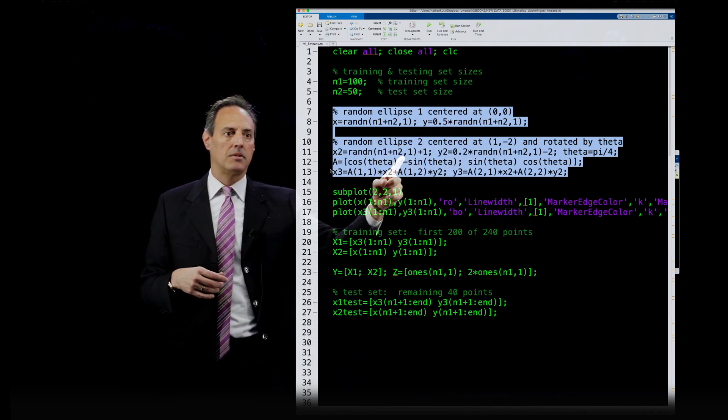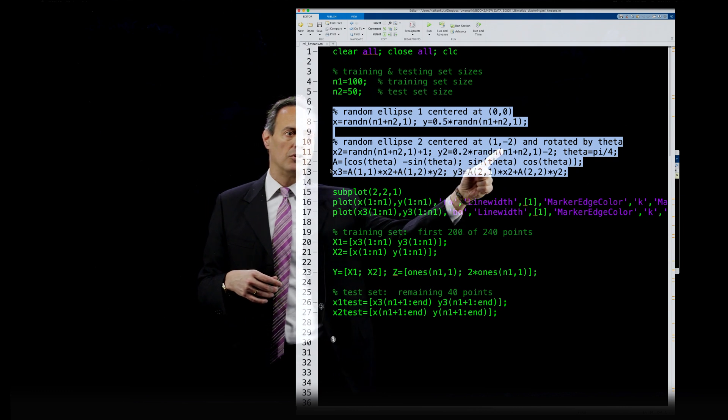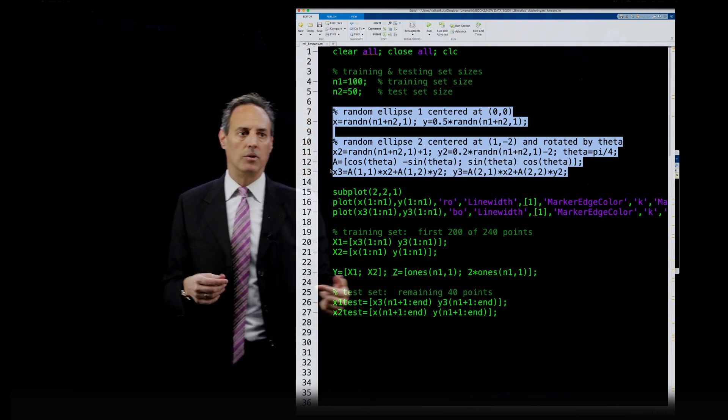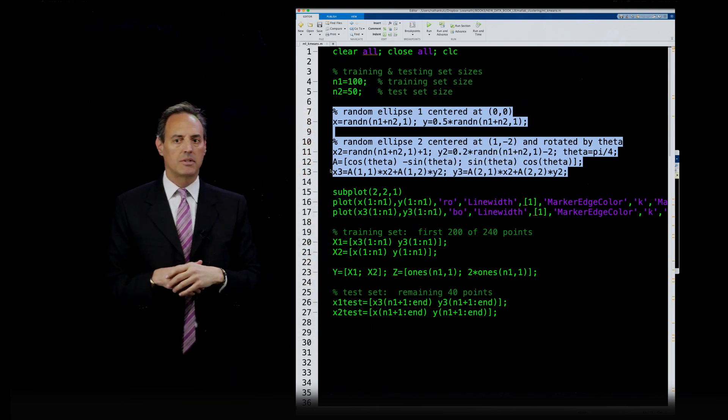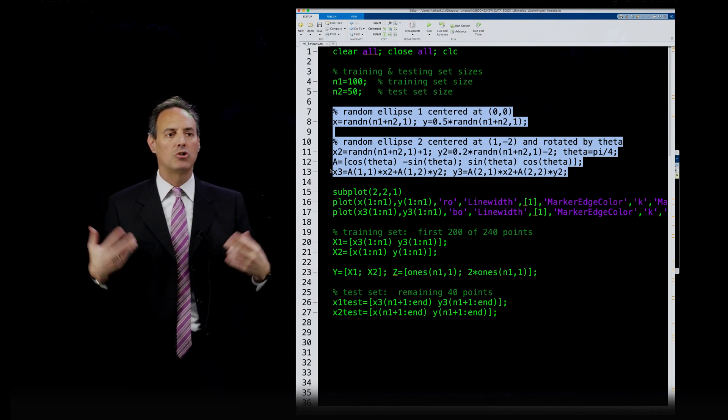So there they are. And they're just going to be basically ellipses from Gaussian distribution. So I'm going to use the RANDN command here. So here's a random ellipse centered at 1 negative 2 and rotated by theta. So with some angle.